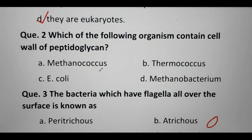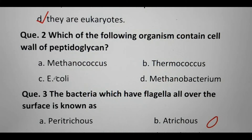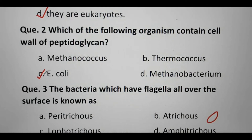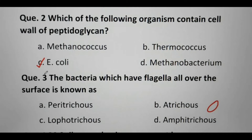Methanococcus, Thermococcus, and Methanobacterium — these three all belong to the Archaea bacteria group. Whereas E. coli belongs to the Bacteria group. In bacteria, the cell wall is made of peptidoglycan. So the right answer is C, E. coli. In Archaebacteria, the cell wall is generally absent.